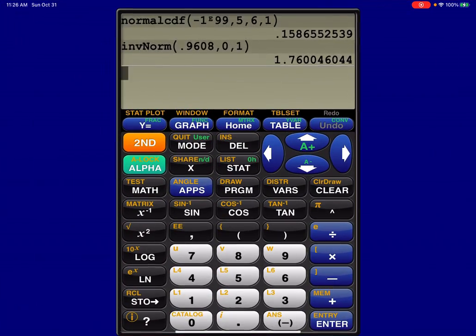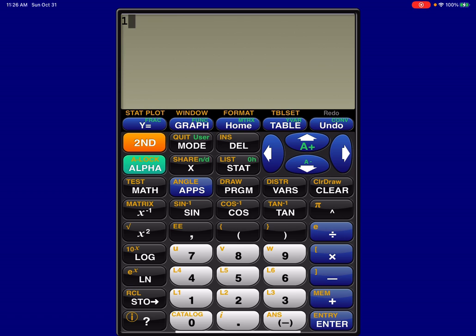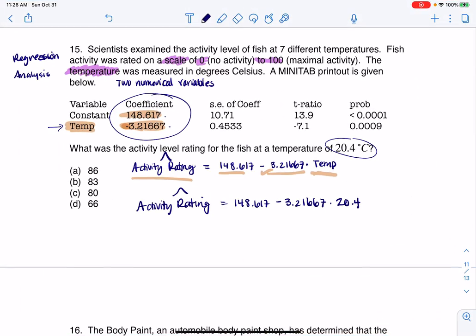Let me clear all of this out. So we have 148.617 minus 3.21667 times 20.4, and we are getting about 82.997. Let me write that: 82.997. It looks like we're doing these activity levels rounded to the nearest whole number, so that's going to be 83. And there's my answer.